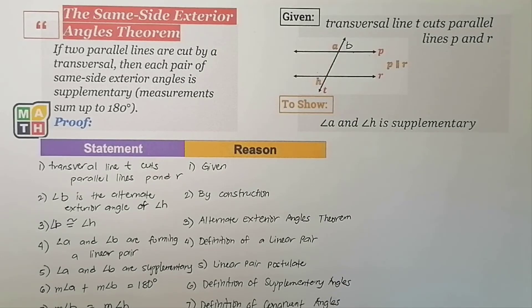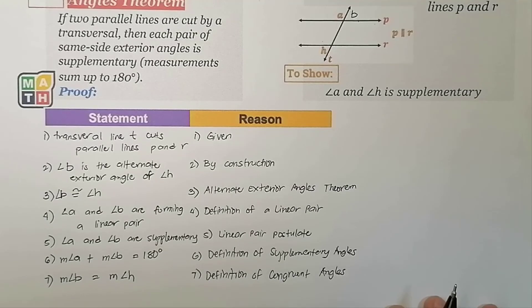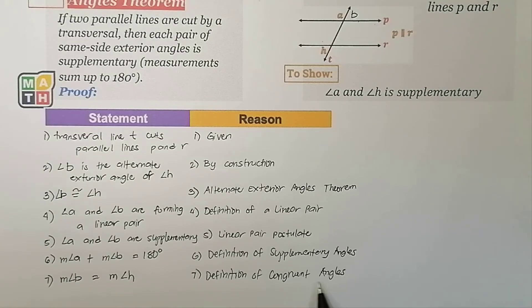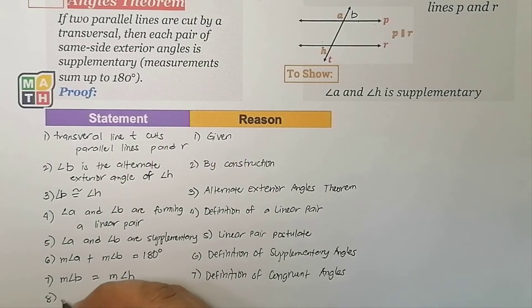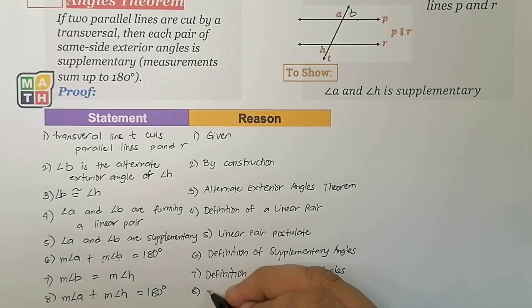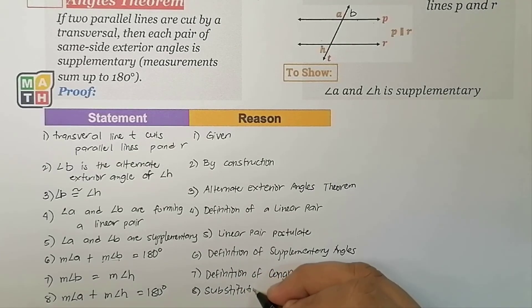Statement seven is very important because we can use the Substitution Property to combine it with statement six. Instead of angle B, we substitute angle H into the equation: the measurement of angle A plus the measurement of angle H equals 180 degrees. The reason is the Substitution Property.